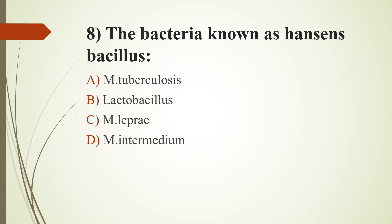Eighth question: The bacteria known as Hansen's bacillus. Option A: Mycobacterium tuberculosis. Option B: Lactobacillus. Option C: Mycobacterium leprae. Option D: Mycobacterium intermedium. Answer is Option C, Mycobacterium leprae. Gerhard R. Moore Hansen discovered Mycobacterium leprae, hence the name Hansen's bacillus. Mycobacterium tuberculosis was discovered by Robert Koch. Lactobacillus is an acidophilus bacterium. Mycobacterium intermedium is a slowly growing mycobacterium species.